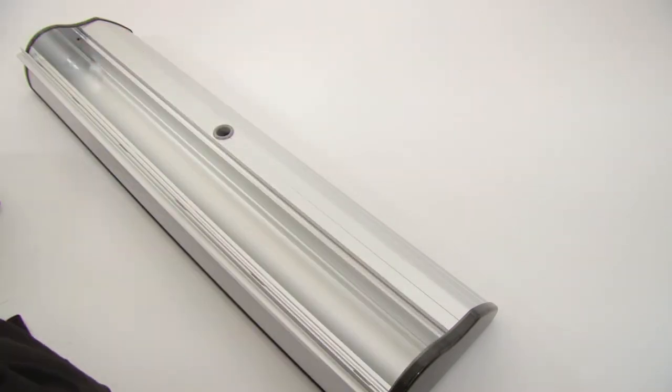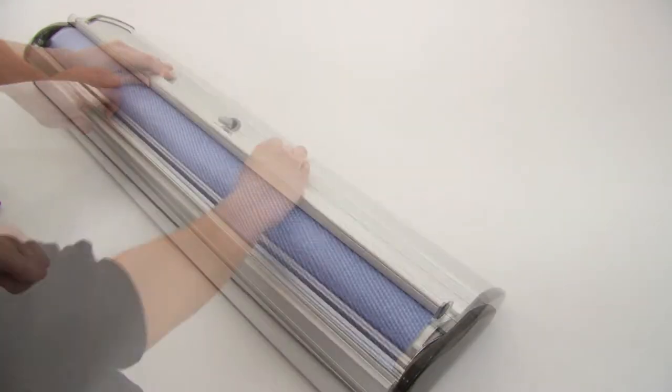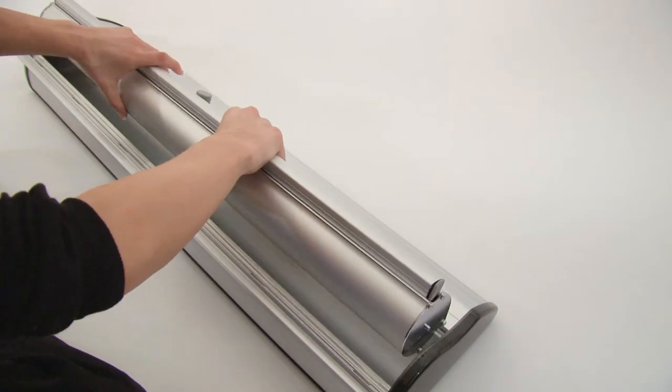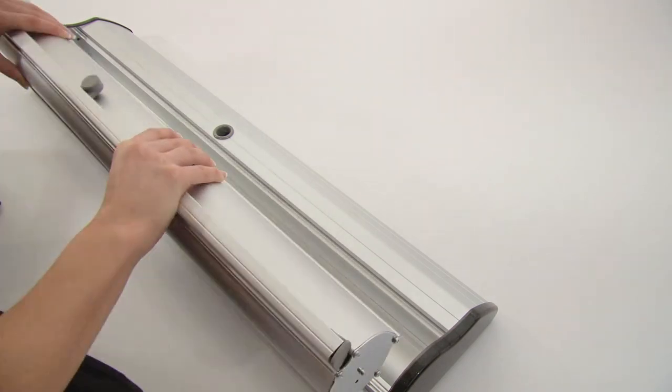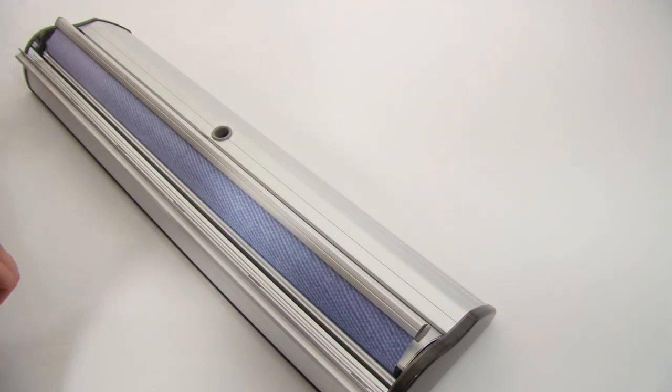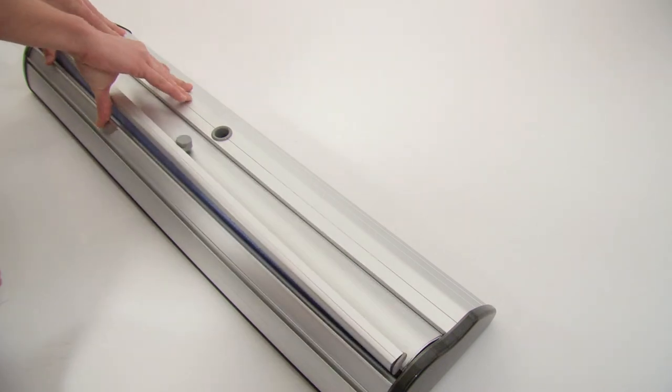This banner uses a removable cassette system that makes swapping graphics incredibly easy. To change the graphic, lift the snap rail. Remove the cassette from the base unit and replace it with another cassette. Finally, close the snap rail to secure the graphic in place.